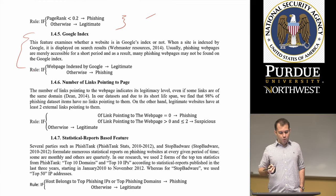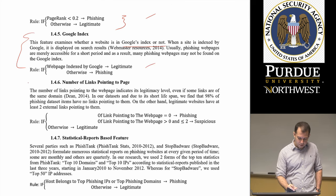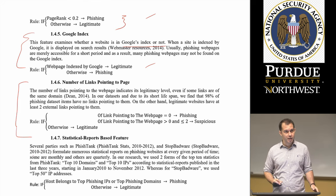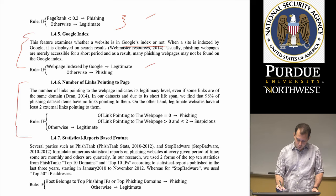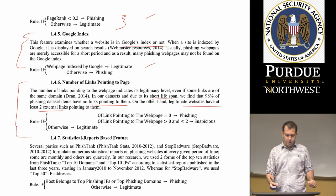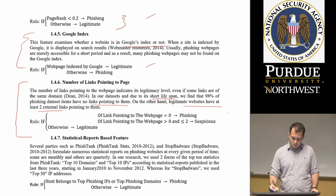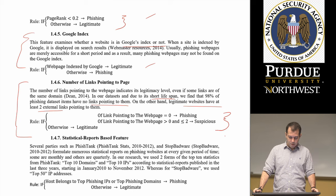Google Index examines whether a website is indexed by Google — if it is, it's likely legitimate; otherwise not. The number of links pointing to the page also indicates its legitimacy. The authors found that 98% of phishing dataset items have no links pointing to them, while legitimate websites have at least two external links. The rule: if the number of links pointing to the page is zero, it's probably phishing; between zero and two, suspicious; otherwise legitimate.